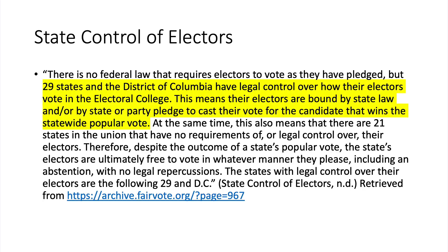Throughout our history as a nation, more than 99% of electors have voted as pledged. There is no federal law requiring electors to vote as pledged, but 29 states and the District of Columbia have legal control over how their electors vote. Their electors are bound by state law and/or a state or party pledge to cast their vote for the candidate that wins the statewide popular vote.